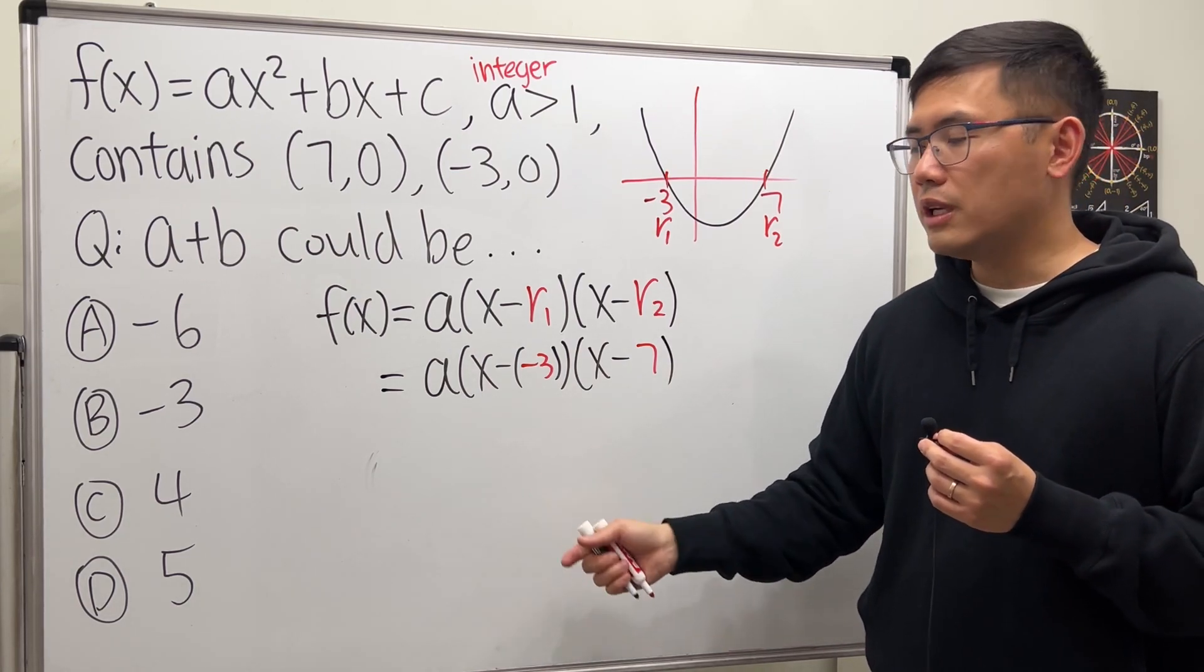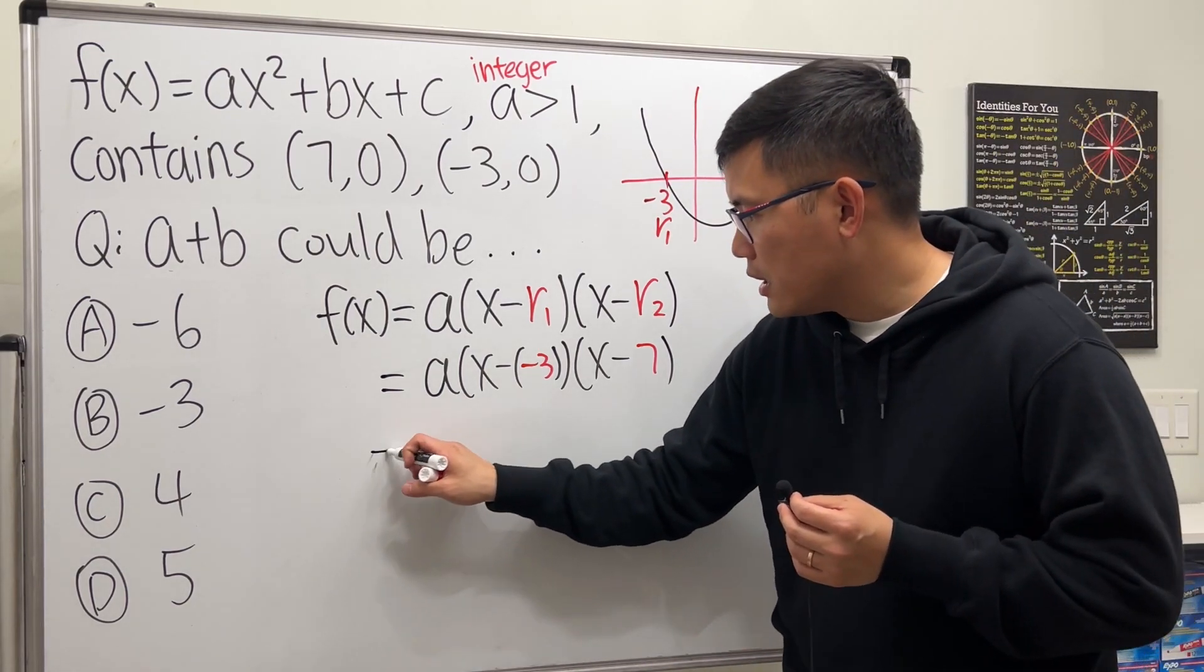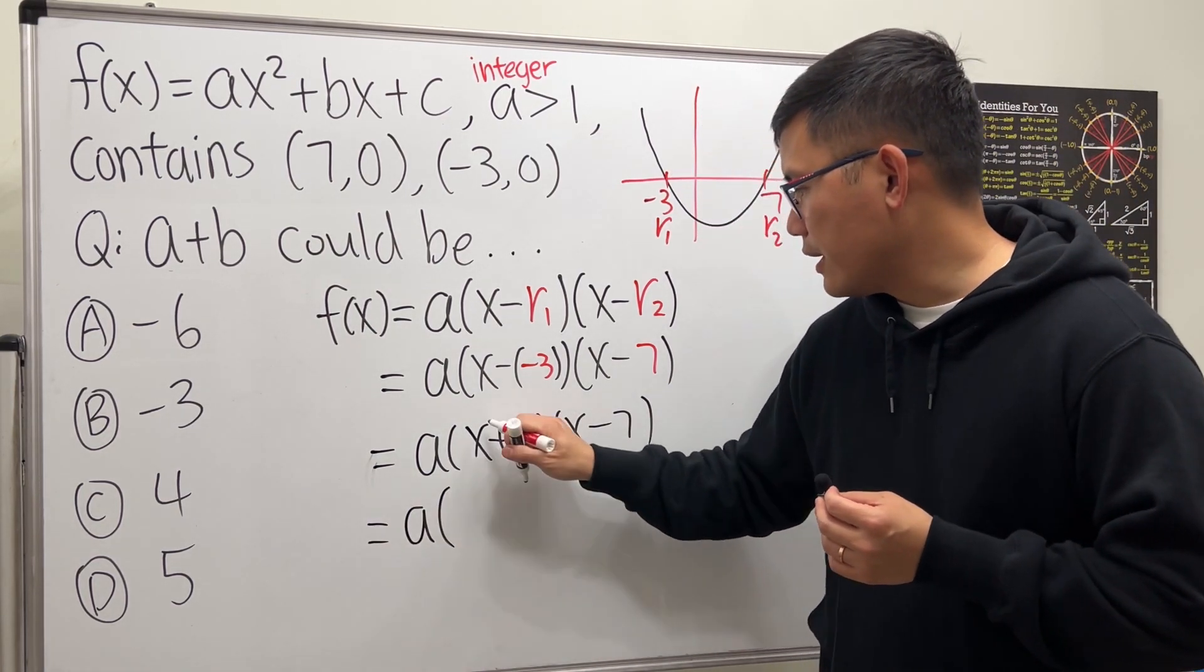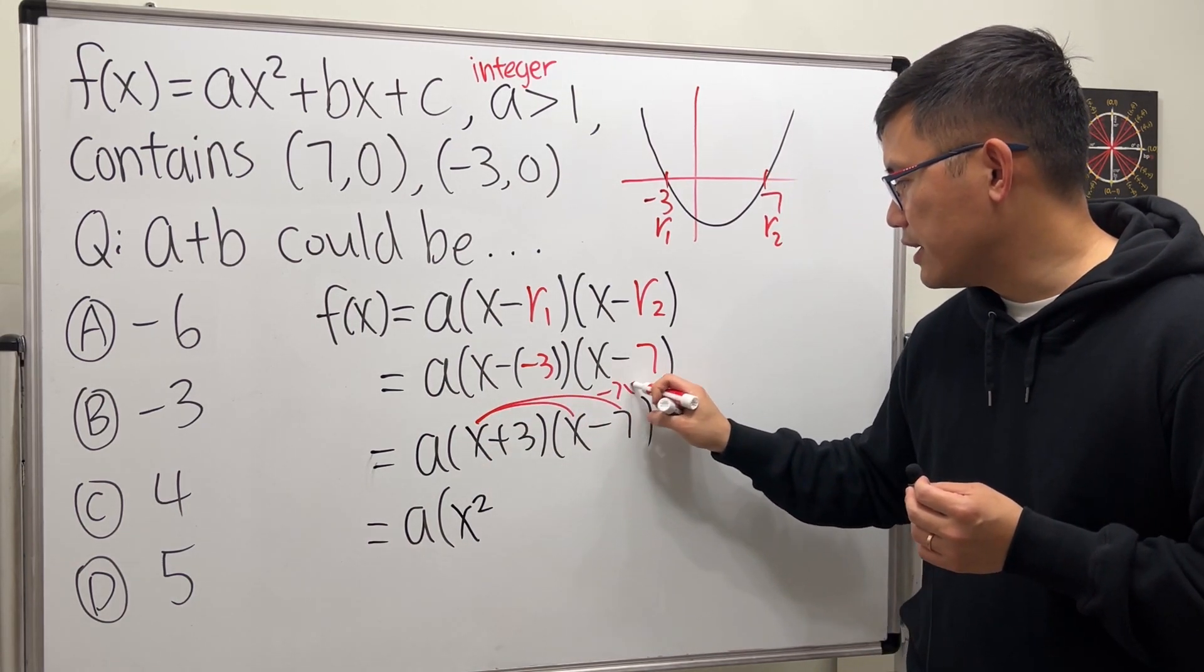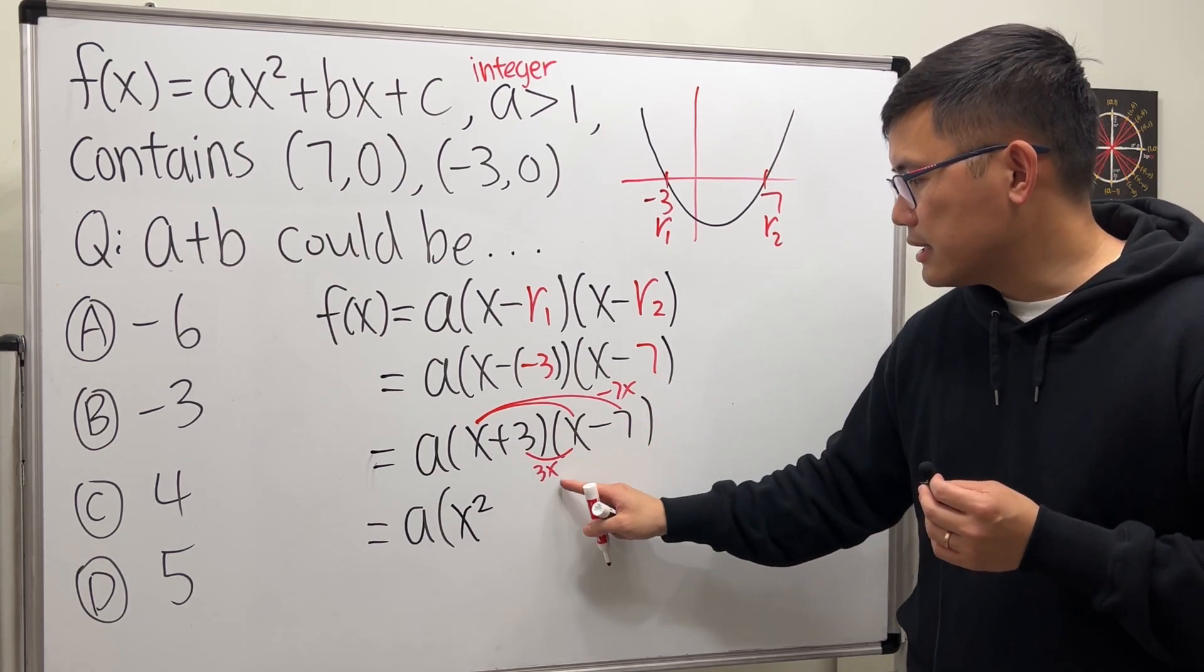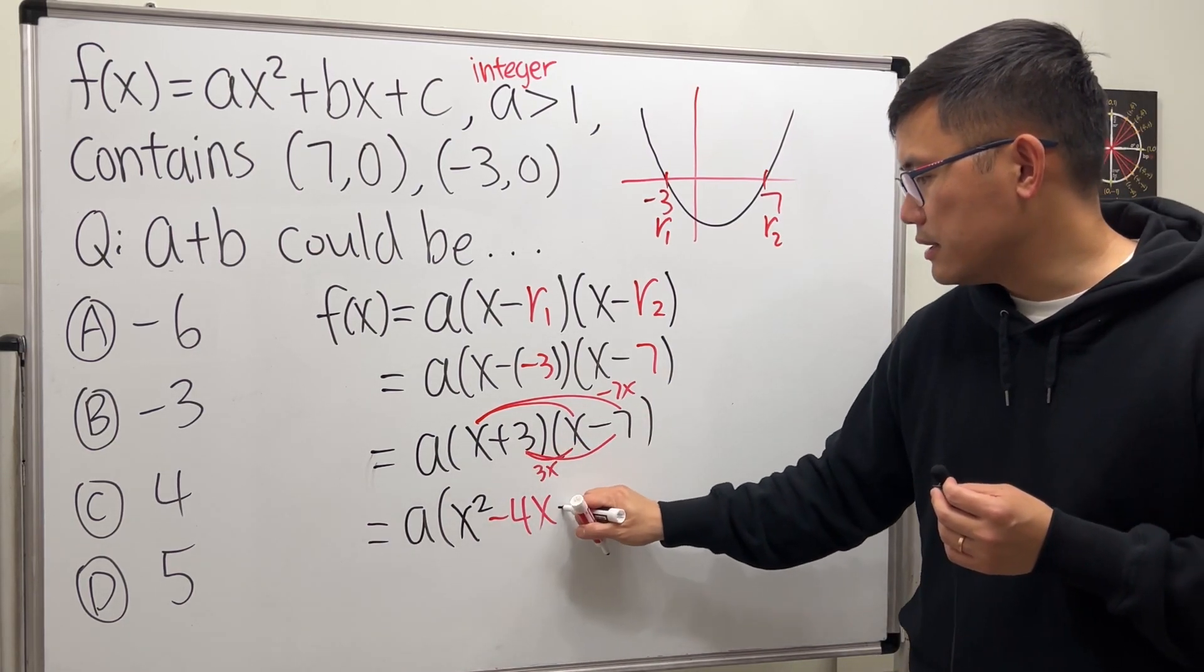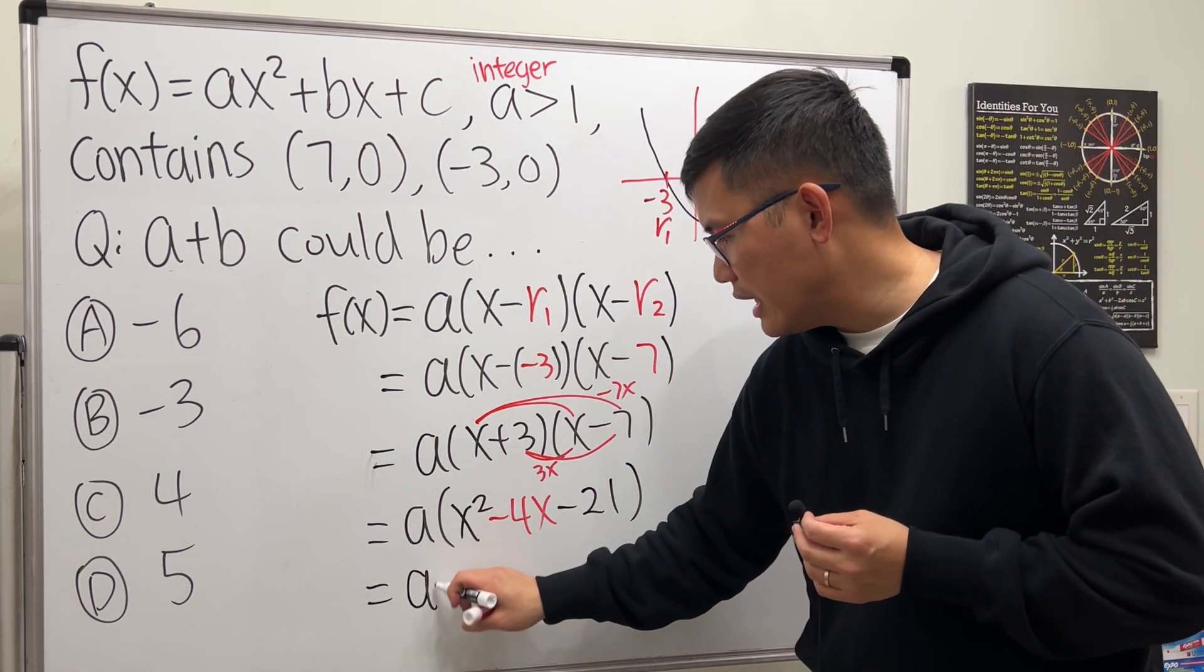Let's just multiply this out and then match the coefficients. So a and this right here is (x+3) and then (x-7). So a, okay, x times x is x², and then x times -7 is -7x. Then 3 times x is 3x, this and that together gives us -4x. Lastly, 3 times -7 is -21. And then distribute the a so we get ax²-4ax-21a.